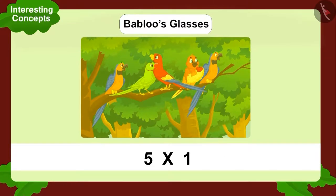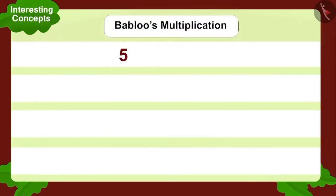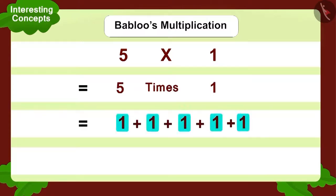Let's look at Bablu's multiplication first. Five multiplied by one. How can we write this using addition? Yes, we can add one five times. So, how many birds in total? Five.